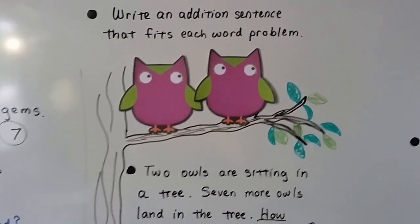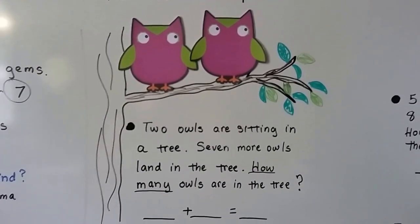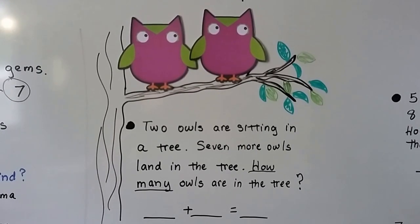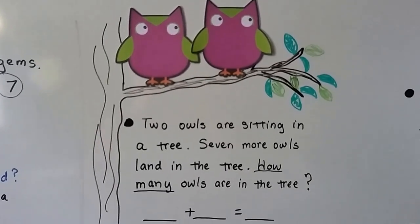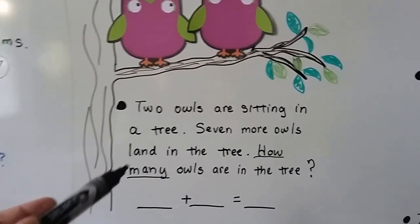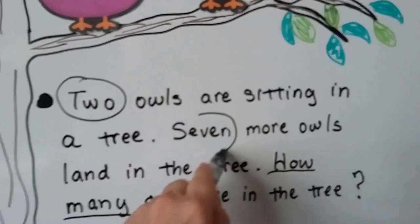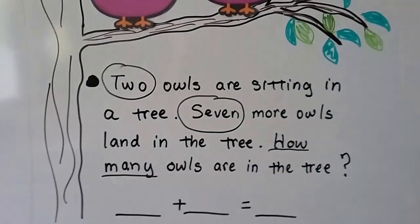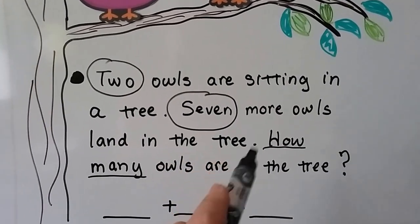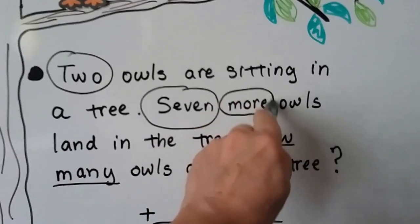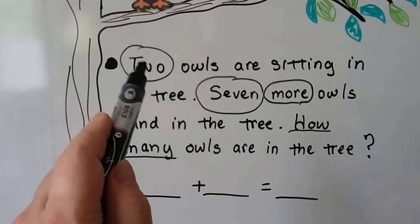Let's try another one. We're going to write an addition sentence that fits each of these word problems. Two owls are sitting in a tree. Seven more owls land in the tree. How many owls are in the tree? We need to circle our important words. The numbers are written as words — we have two and seven. The word 'more' is also important: seven more owls land in the tree tells us we're going to add.